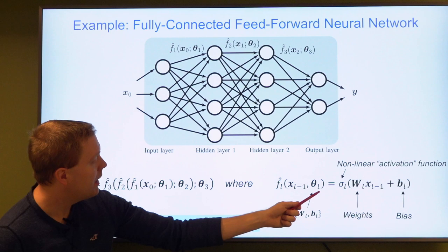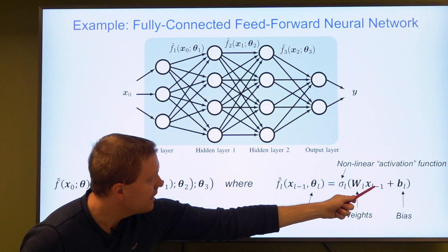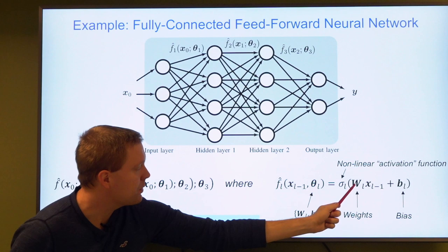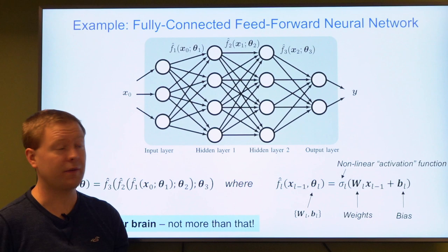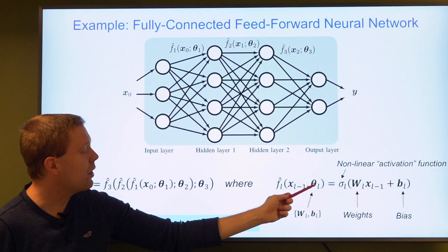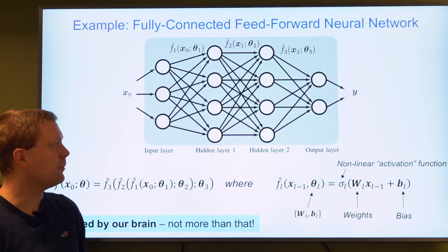What really makes this a neural network is how we choose each function. For the l-th function, which takes input x_{l-1} with parameter values theta_l, we take the vector, multiply it by a weight matrix, add a bias vector, then pass it through a nonlinear activation function to get the values for the next neuron. The weight matrix and bias are what go into the theta_l vector, while the activation function and number of layers are normally selected in advance.